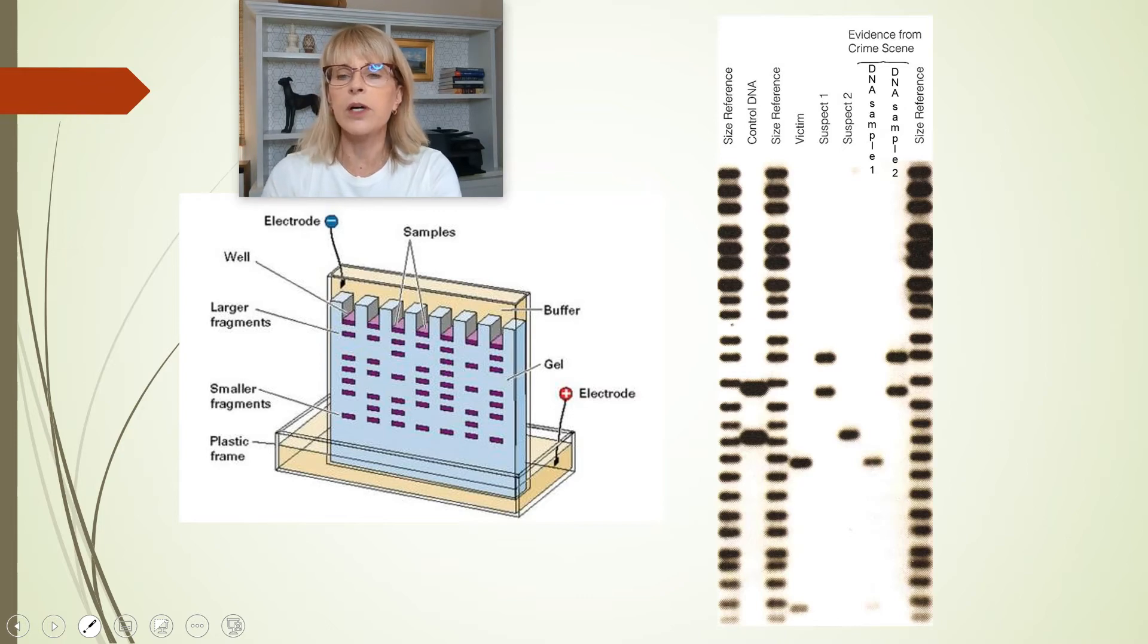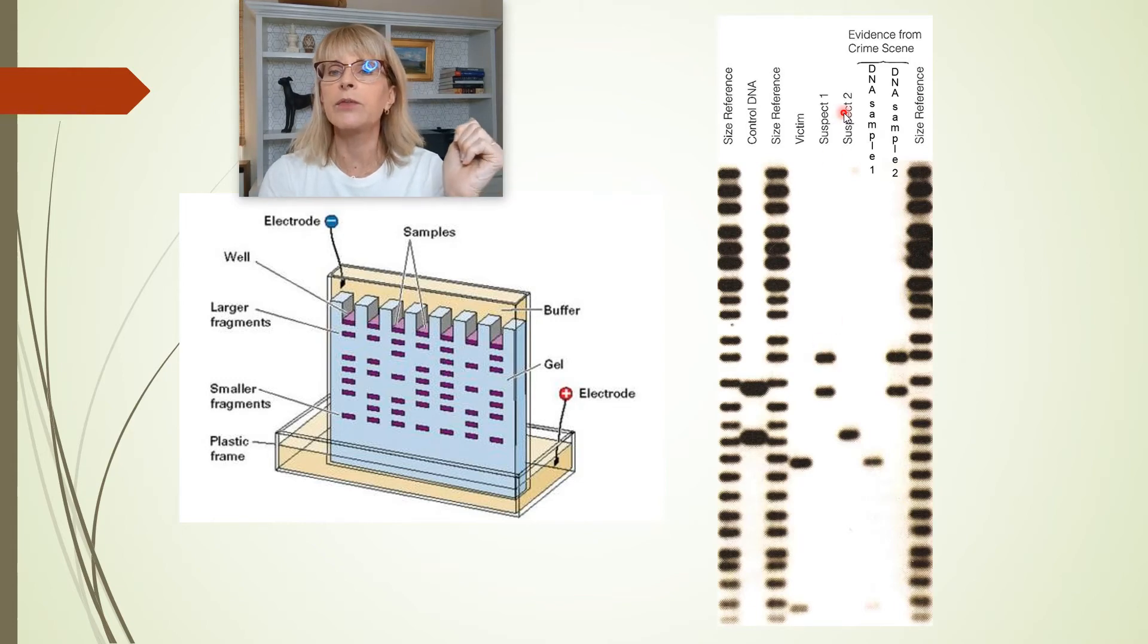Suspect number one had these two pieces. One was cut, but they're both medium-sized, one's bigger than the other. Then we've got suspect number two. Suspect number two appears to just have one chunk of DNA that we see here, and it is smaller than suspect one's chunks, but bigger than the victim's chunks of DNA.